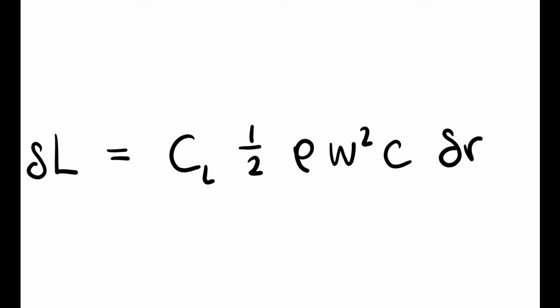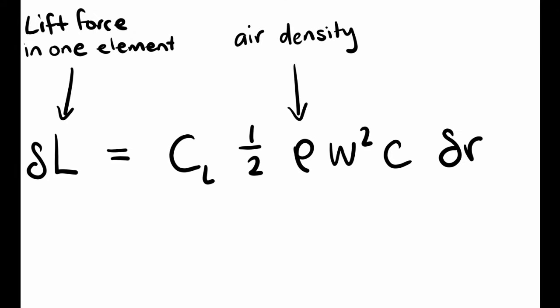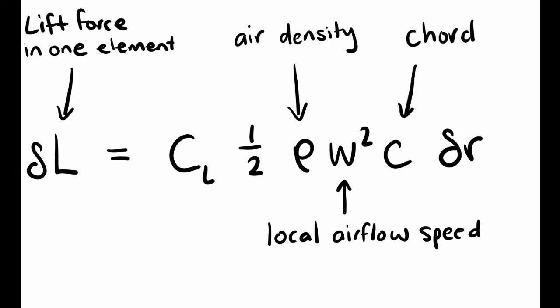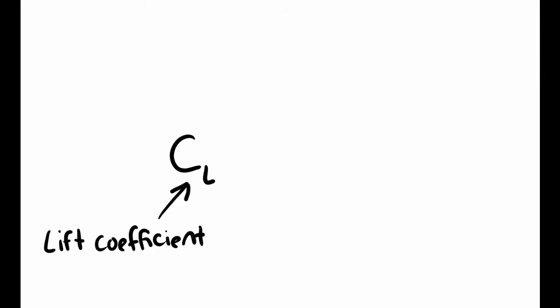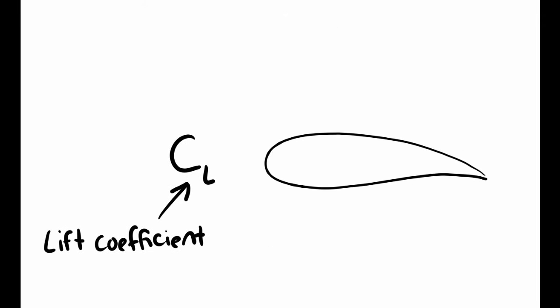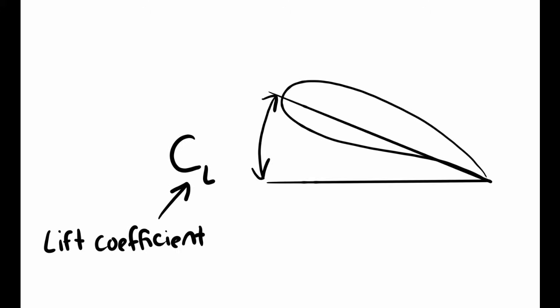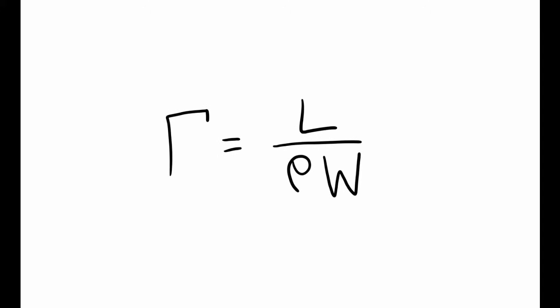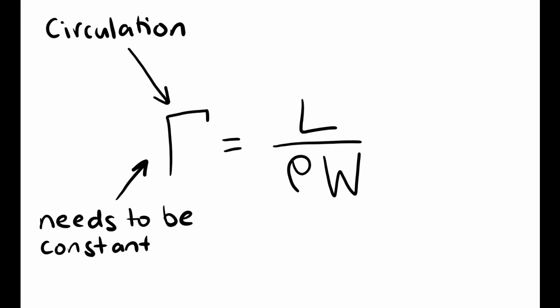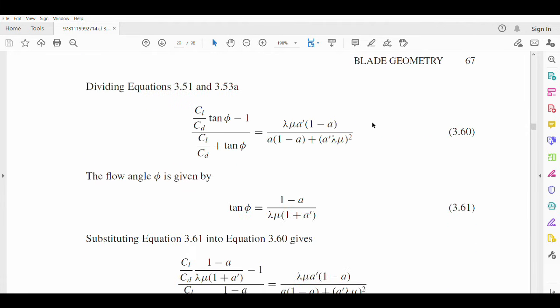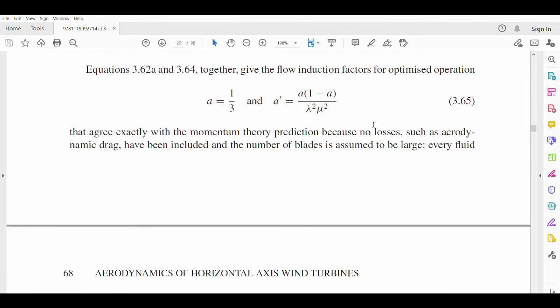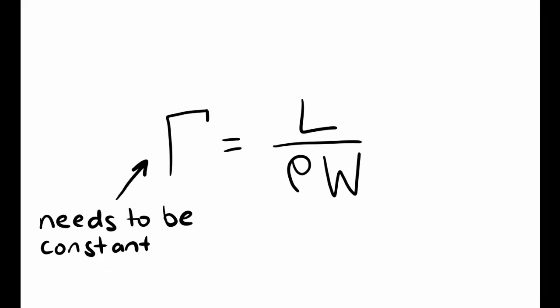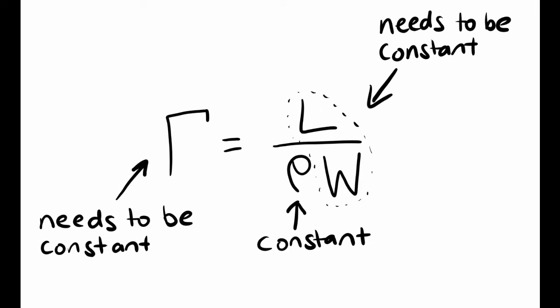We saw in the last video the equation for lift. The lift force depends on the air density, the local airflow speed, chord, and lift coefficient, which itself depends on the shape of the aerofoil and the local angle of attack. The most efficient lift distribution occurs when there's constant circulation along the span. Basically, what you need to know is that the lift divided by the relative flow velocity should be constant along the span.